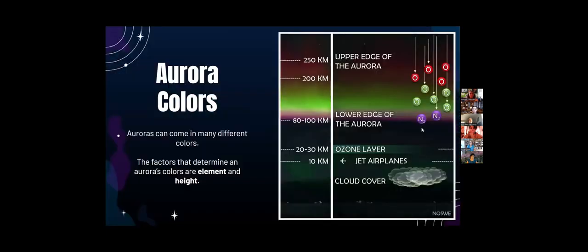A single instance of the Northern Lights often contains multiple colors and layers displayed by element and height. Red and green auroras are both caused by collisions with oxygen atoms, but they only grow red from about 300 to 400 kilometers above Earth's surface, and green from about 100 to 300 kilometers above the Earth's surface. Nitrogen collisions cause pink and blue.